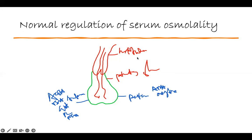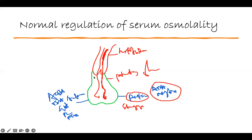One thing you have to know is the posterior pituitary gland — it doesn't actually secrete anything. The ADH and oxytocin are made in the hypothalamus, then travel all the way down to the posterior pituitary and are stored there. When your body needs them, they can be released.